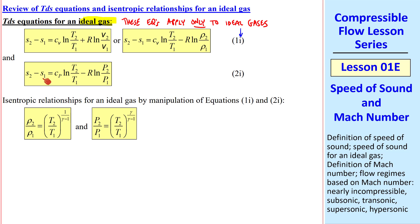If we set S2 equal to S1, in other words, isentropic, and do a little bit of algebra, we get these two equations for the density ratio and the pressure ratio, in terms of temperature ratio. And gamma, of course, is the ratio of specific heats.